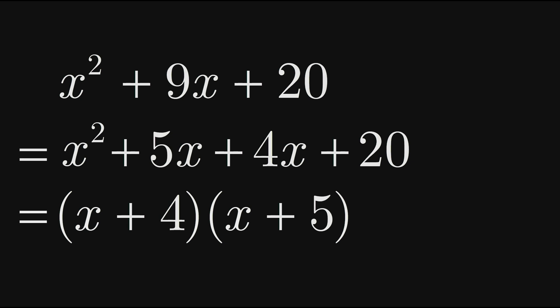First, notice that when multiplied, the x terms of our two factors give us the x squared term of the expanded expression. Similarly, the constant terms 4 and 5 multiply to give us the constant term 20 in the expanded expression.